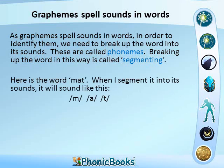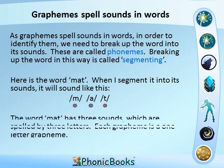Breaking up the word in this way is called segmenting. Here is the word 'mat'. When I segment it into its sounds it will sound like this: M, A, T. The word mat has three sounds which are spelled by three letters. Each grapheme is a one-letter grapheme.